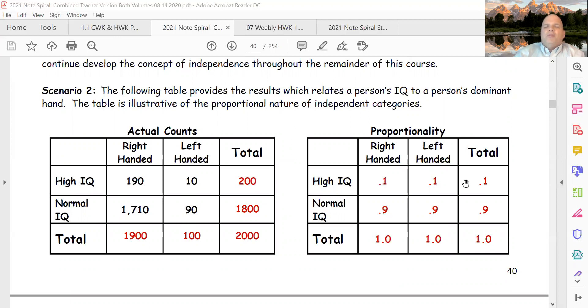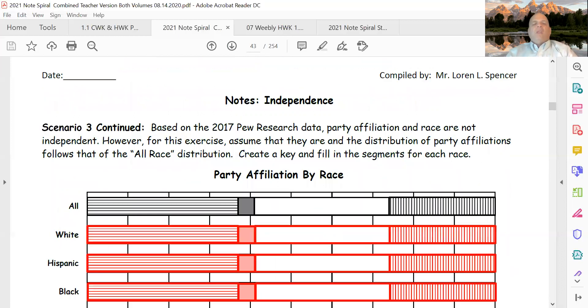Normal IQ is 90% regardless whether you're right-handed or left-handed. So that tells me they're proportional, and because they're proportional they are independent. In other words, whether you're left-handed or right-handed, it doesn't seem to impact IQ and vice versa.